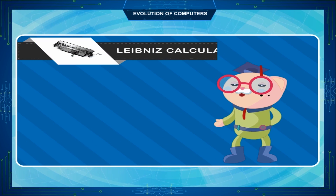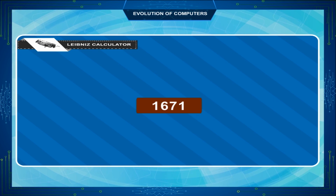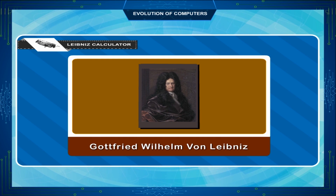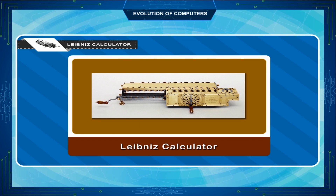Leibniz Calculator: In the year 1671, a German mathematician, Gottfried Wilhelm von Leibniz, modified the Pascal calculator and developed a machine which could perform various calculations based on multiplication and division as well.